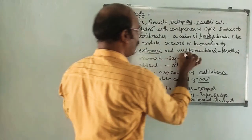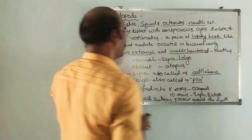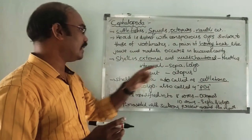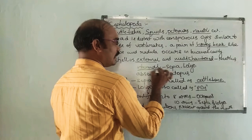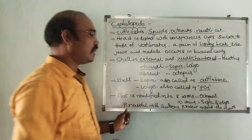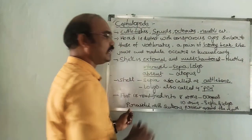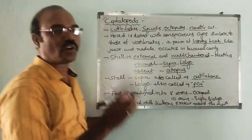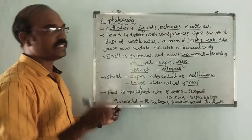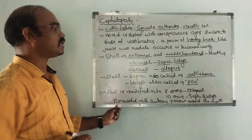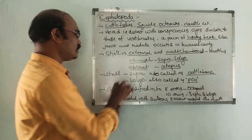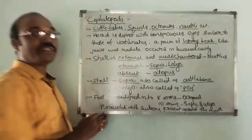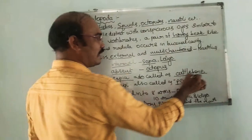The shell is external and multi-chambered in Nautilus, while in other cephalopods the shell is internal. The internal shell of cephalopods is also called the cuttlebone.